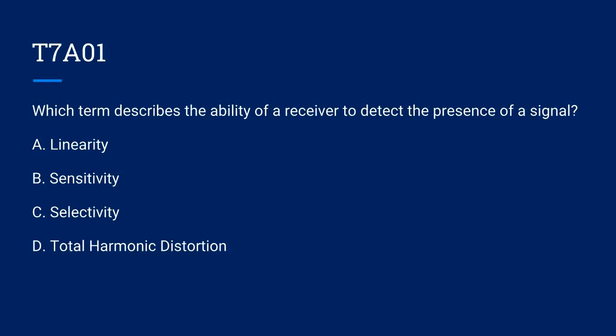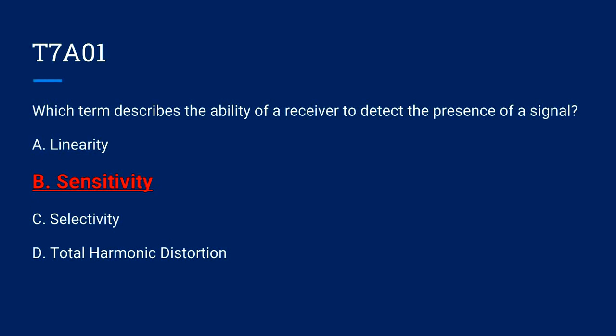T7A01. Which term describes the ability of a receiver to detect the presence of a signal? A. Linearity. B. Sensitivity. C. Selectivity. Or D. Total Harmonic Distortion. The correct answer is B. Sensitivity.